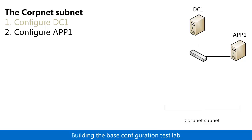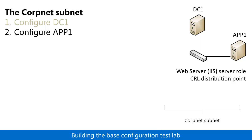In Step 2, you add the computer named App1 and join it to the corp.contoso.com domain. You then install the web server IIS role, configure App1 to host a Certificate Revocation List, or CRL, distribution point, and then configure it as a file server.